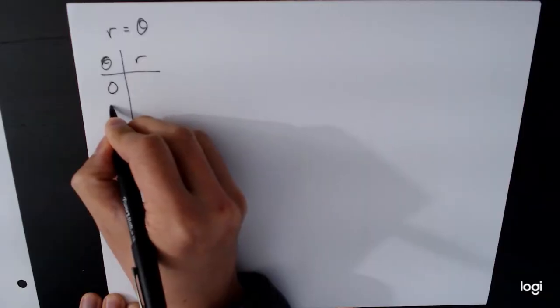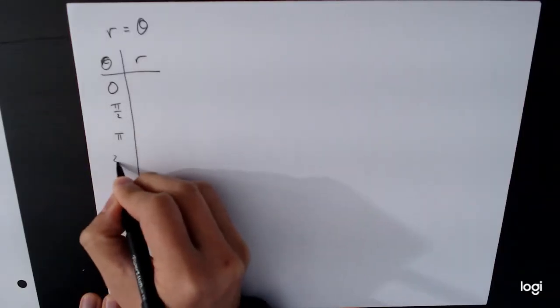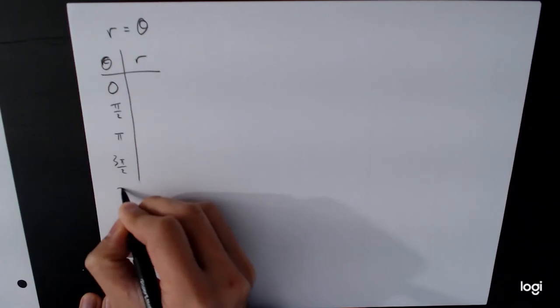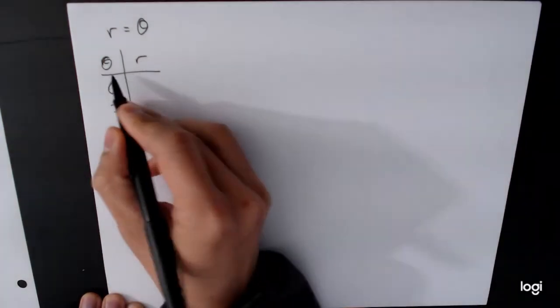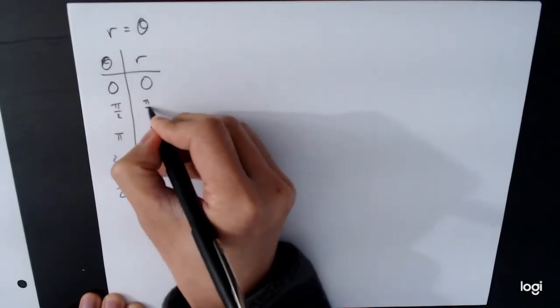For something like this, I think we can go 0, π over 2, π, 3π over 2, and 2π. What are the corresponding r values? Well, r is just equal to theta, so we can graph that.